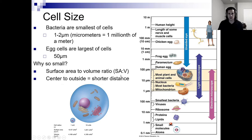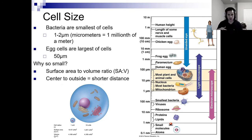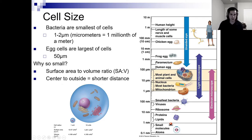Surface area to volume ratio. So when you are a tiny cell, you're a soup of a lot of different things that all have their own function. The things in the center of the cell might need to interact with things on the outside, and vice versa. Smaller cells are actually more efficient at getting things done quickly because there's less space to travel from the outside to the nucleus versus a larger cell, where there's more space to travel and cellular processes might take more time.